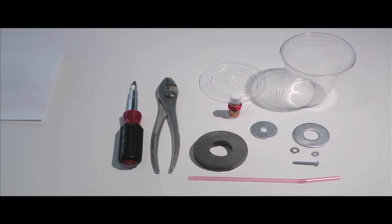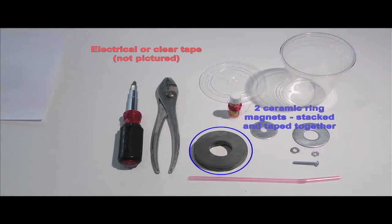Here we have all the materials you'll need to build your microphone laid out. You'll need two ceramic ring, half-inch thick magnets. In our photo, these are already taped together with electrical tape, something you'll need to do.